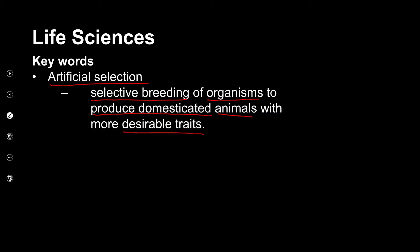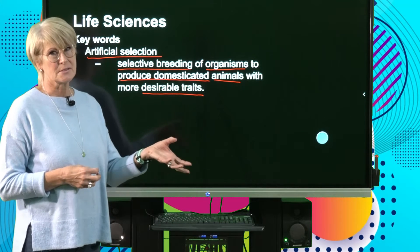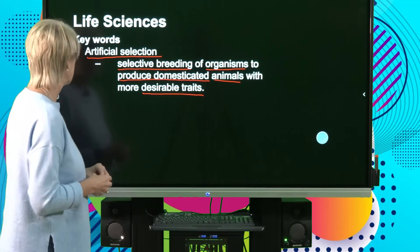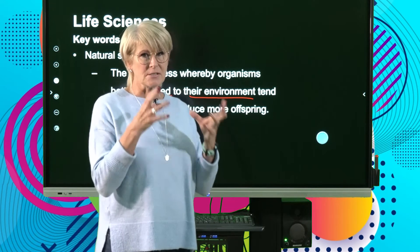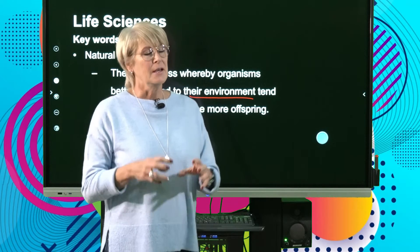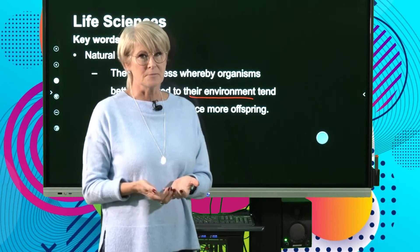Basically, humans are selecting certain characteristics that satisfy their own needs. Then natural selection, which is the opposite, is the process whereby organisms better adapted to their environment tend to survive and produce more offspring. There, it's nature selecting the characteristics, and that allows the organisms to survive.